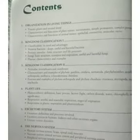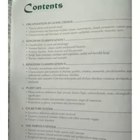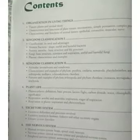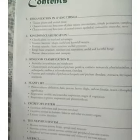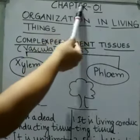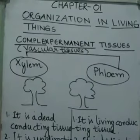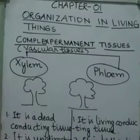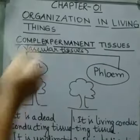In the other practical file you will be doing the practicals and experiments. Students, we continue with chapter one: Organization in Living Things. We have already done simple permanent tissues and its types. Now we will be doing complex permanent tissues and its types.